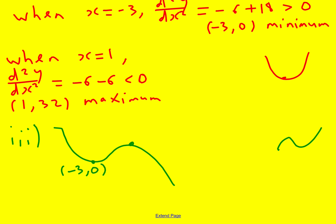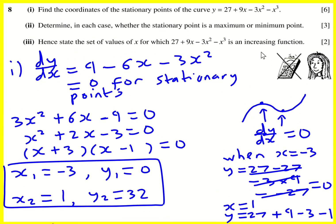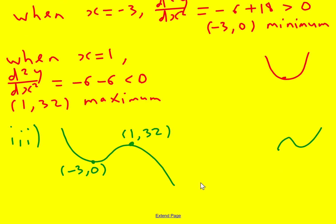Minus 3, 0 is here. And then 1, 32 is here. So where is this an increasing function? It's where the gradient is positive. And if we travel along the curve, here it's negative. Here it's 0. Here it's positive. Then it becomes 0. Then it becomes negative. So it's this region. And I can simply write down that it's minus 3, less than x, less than 1. That's going to be my region. It doesn't include it because it's technically not increasing or decreasing. At the stationary point, it's temporarily 0. That's our answer.